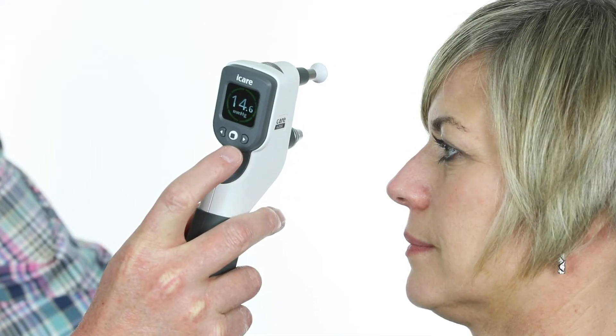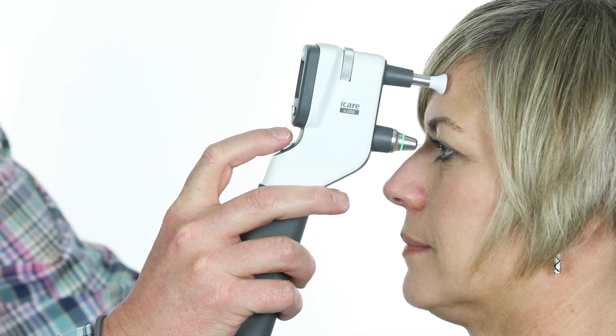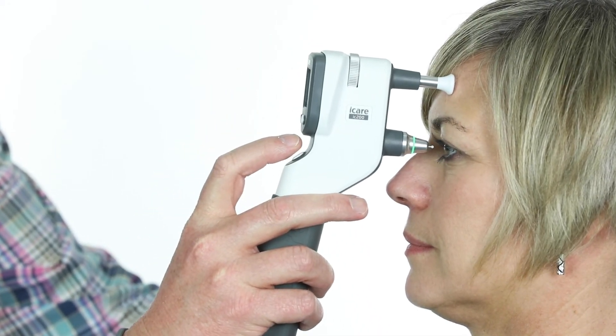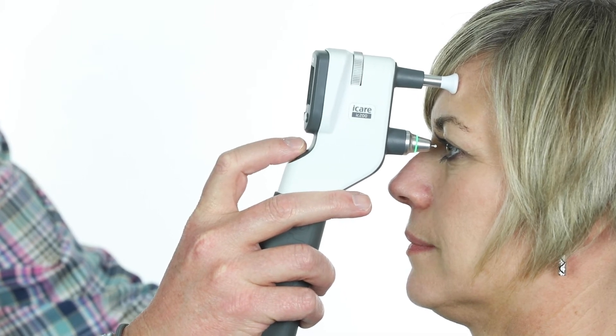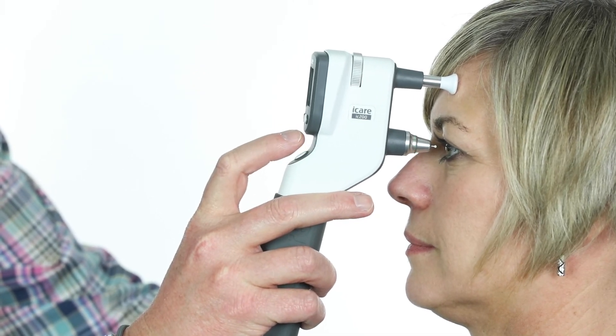Press the measure button once to clear the reading. To perform individual measurements, press the measure button lightly 6 separate times or until you hear a long beep.